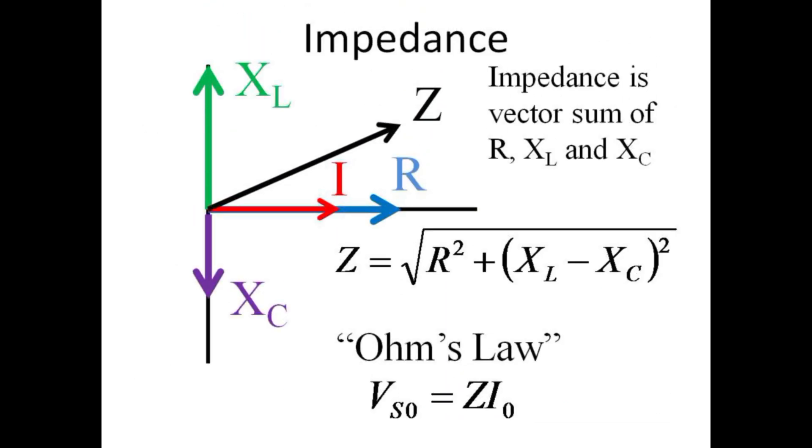In general, the impedance of the entire circuit, Z, is obtained by combining vectors for resistance, capacitive, and inductive reactance. Ohm's law for this circuit then relates the voltage from the source to the impedance and the current: V equals I times Z.